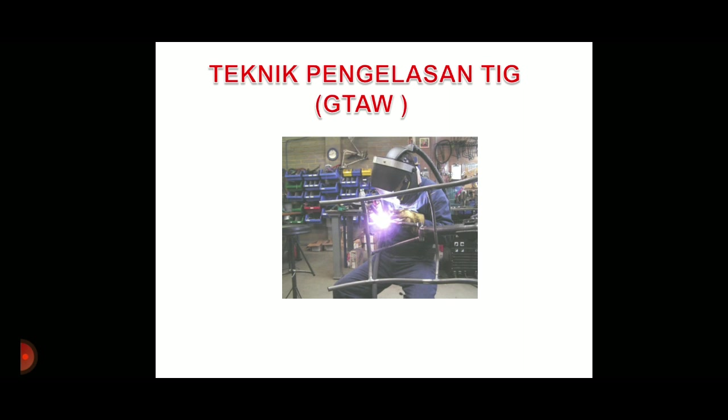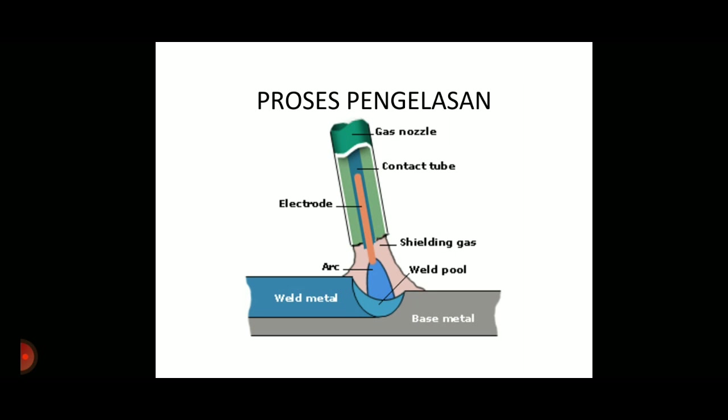Ini gambar pengelasan TIG atau GTAW. Ini proses pengelasan elektroda - elektroda itu ada gas, ada kontak tip, ada elektrodanya, ada busur, ada bahan dasar. Ini baru proses pemanasan. Berarti elektroda itu fungsinya untuk menciptakan nyala busur. Nyala busur menghasilkan panas, melelehkan bahan dasar dan bahan tambah. Ini bahan tambahnya belum ada, ini baru proses pencairan pemanasan, pelehan logam dasar dengan elektroda tungsten.